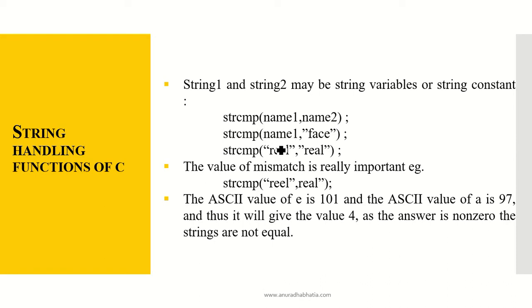Strcmp name1, name2, name1 PACE. Strcmp REAL with REAL. Now when I am comparing these two, the value of the mismatch is really important. Strcmp REAL with REAL. The first mismatch occurs at E and A. So the ASCII value of E is 101 and the ASCII value of A is 97.